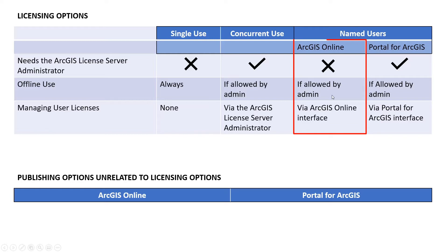ArcGIS Online, which as I mentioned is the default licensing method, manages the licenses through the ArcGIS Online platform. You would go to ArcGIS.com, sign into your organization, and decide which users get access to ArcGIS Pro.